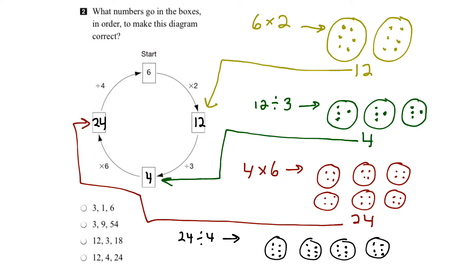So our numbers as we go from the start should be 12, 4, and 24. If we look down our list of options, we can see that it's the last one. That is correct.